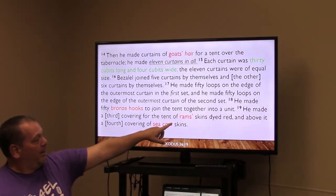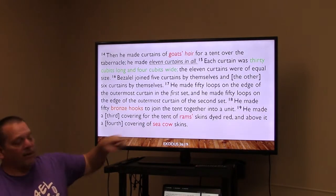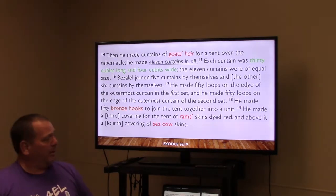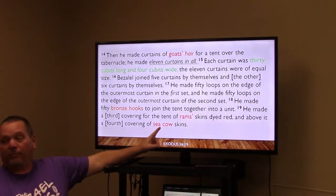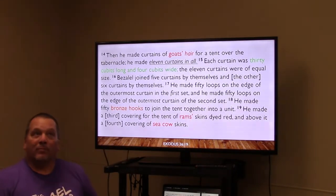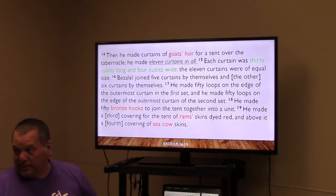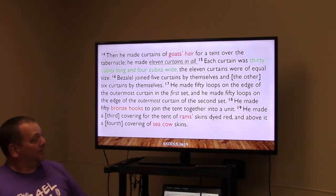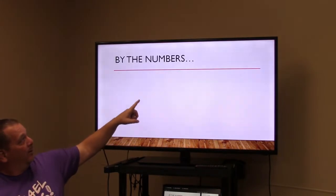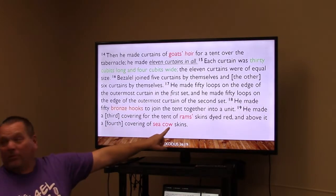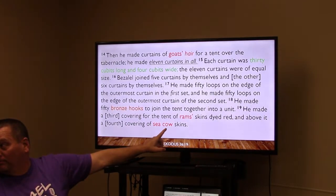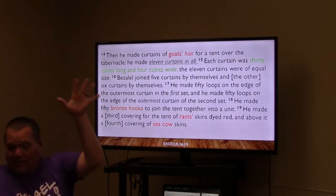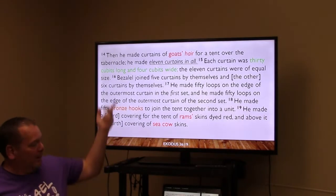The ram skins were dyed red — representing covenant blessing and the promise of blood sacrifice, pointing forward to the Messiah's blood that would one day pay the debt. The outermost layer was sea cow — manatee — skin, which was waterproof as the last protective coating.